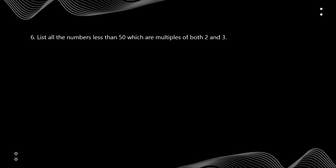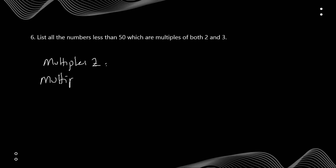In this question we have to list numbers less than 50 that are multiples of both 2 and 3. So we need to list all multiples of 2 and all multiples of 3 separately. The table of 2 is quite easy.